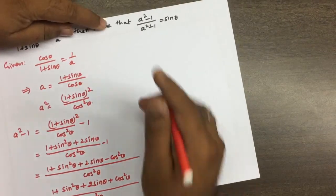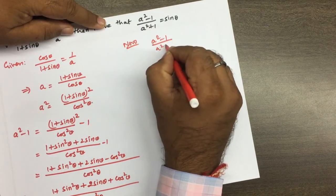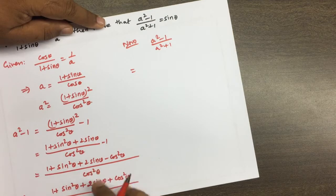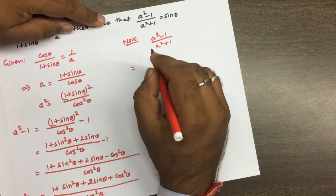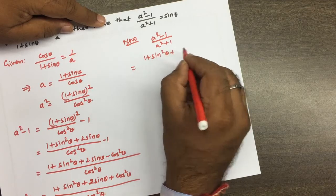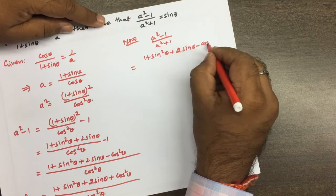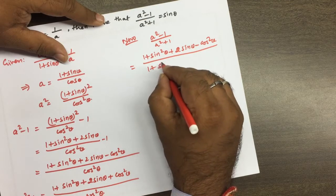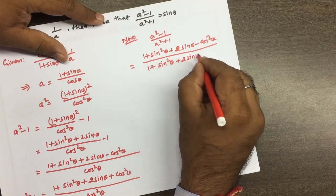Now to get (a² - 1) / (a² + 1), we observe that both denominators are the same, so they can be removed. So in the numerator we have (1 + sin²θ + 2 sin θ - cos²θ) divided by (1 + sin²θ + 2 sin θ + cos²θ).